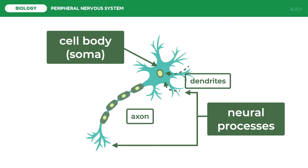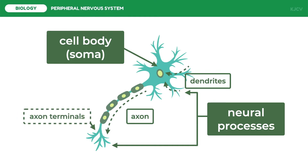The axon or nerve fiber is a single elongated tubular extension that conducts action potentials away from the cell body and eventually terminates in other cells. The action potentials triggered near the cell body are conducted along the axon to the typically highly branched endings at the axon terminals. Functionally, the axon is the conducting zone of the neuron, and the axon terminals constitute its output zone.